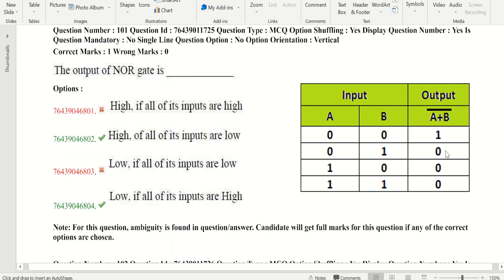Let's draw the truth table. Here is the truth table. Now let's cross check with this. High if all the inputs are high. If all inputs are high, the output should be also high. Here we have high input, but we have low output. So this is wrong.